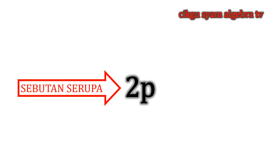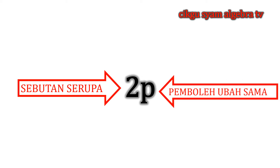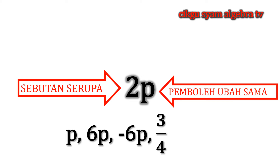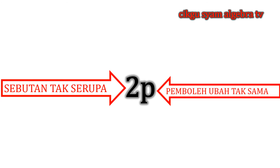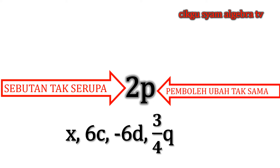2P. Sebutan serupa dan sebutan tidak serupa. Sebutan serupa mempunyai pembeli ubah yang sama. Contoh: 6P dan 36P sama dengan 34P atau 7.1P. Sebutan tidak serupa mempunyai pembeli ubah yang tak sama, contohnya: X, 6C, 6D, 34Q, dan 7.1D.